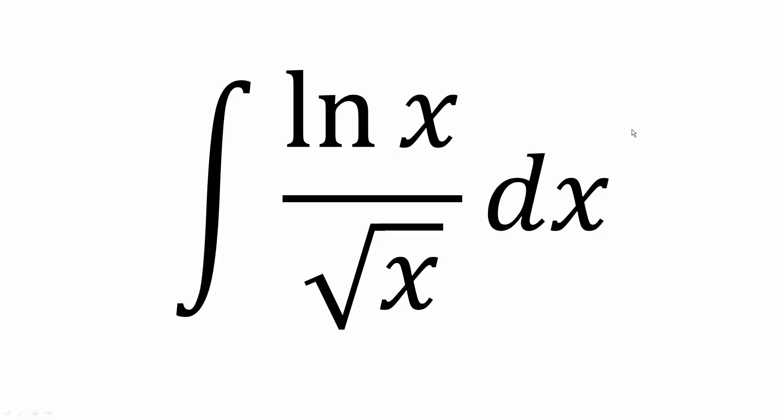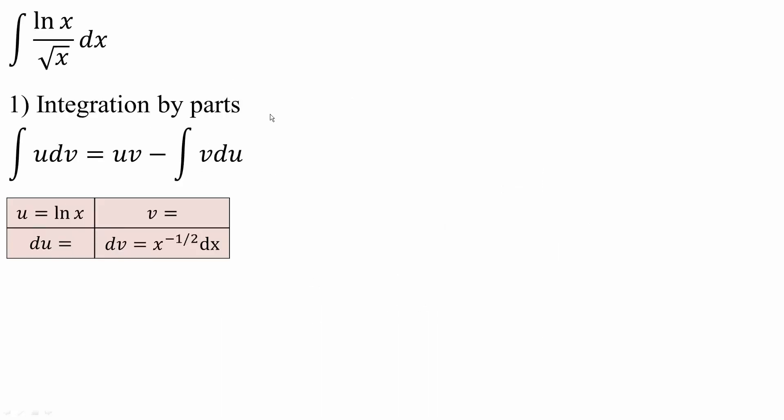In this video, we will solve this integral right here. Let's begin. We will use integration by parts. The formula for integration by parts is as follows: the integral of u dv is equal to uv minus the integral v du.